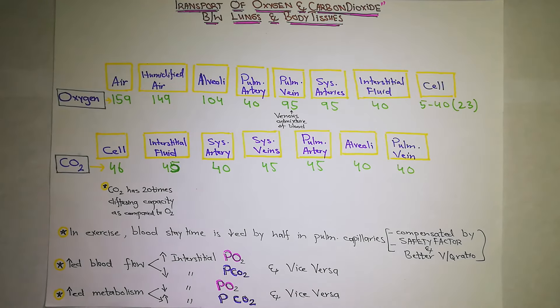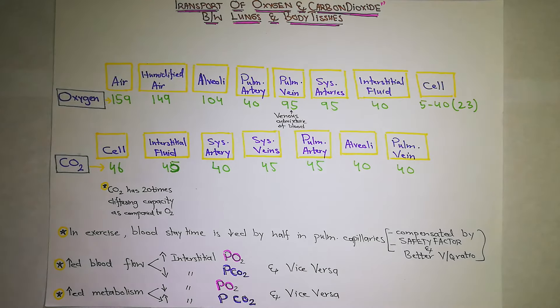Assalamualaikum everyone, this is guiding chapter number 41, part 1. This chapter's name is Transport of Oxygen and Carbon Dioxide in Blood and Tissue Fluids.